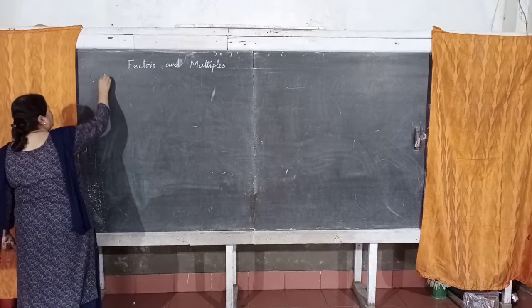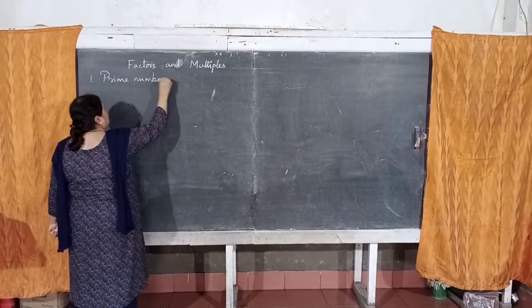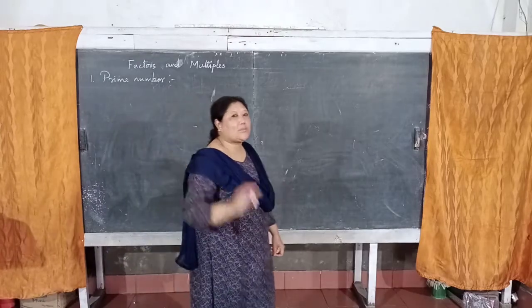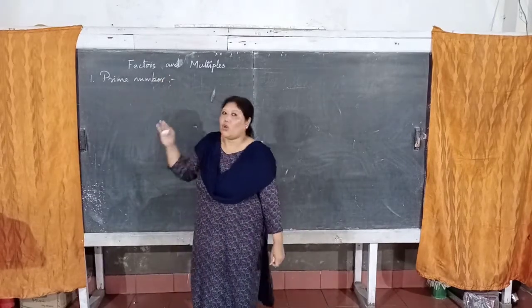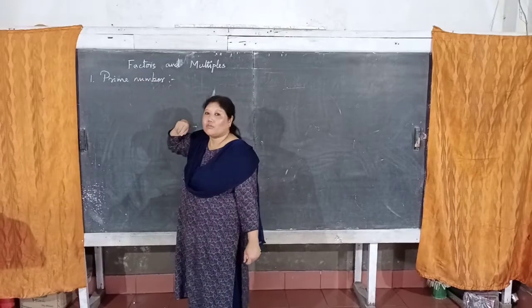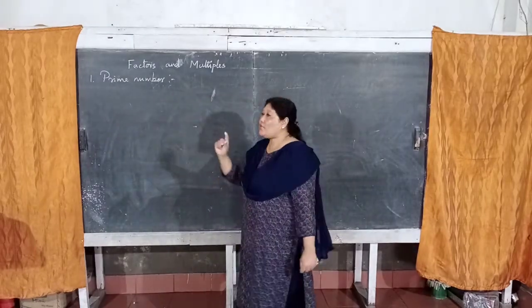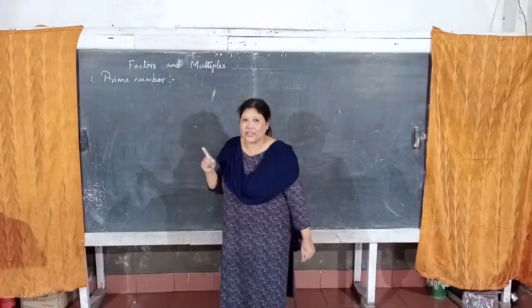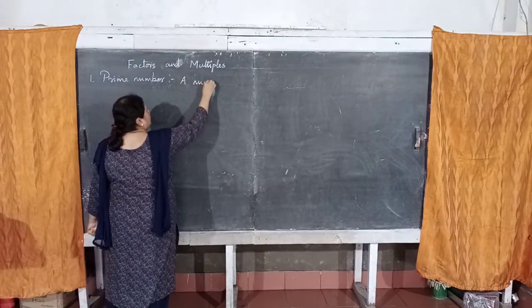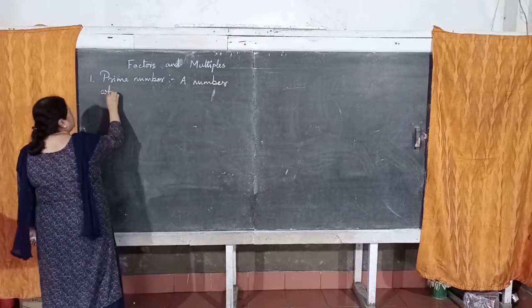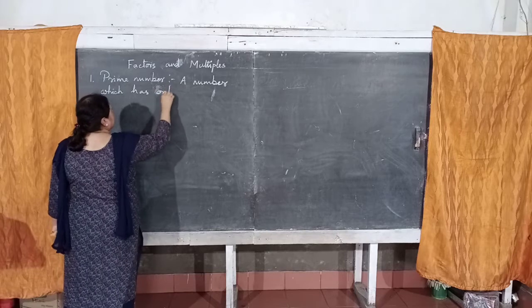First one is prime number. Why am I teaching prime numbers now and not first, before factors? Because the definition of a prime number is a number which has two factors, and if you didn't understand factors first, how would you understand prime numbers? So a prime number is a number which has only two factors.